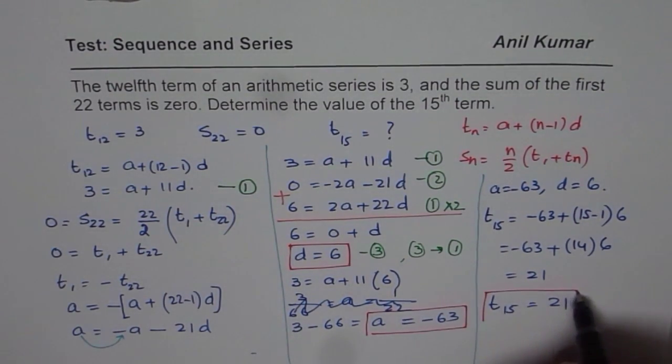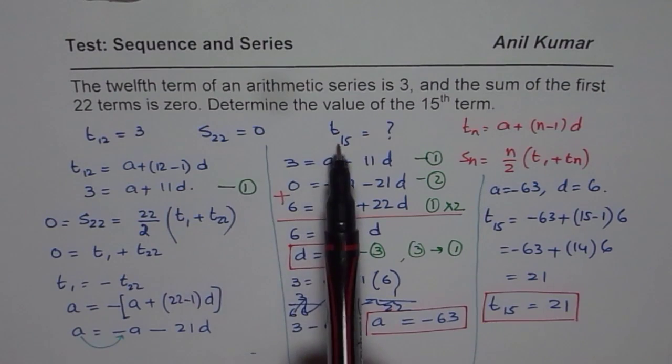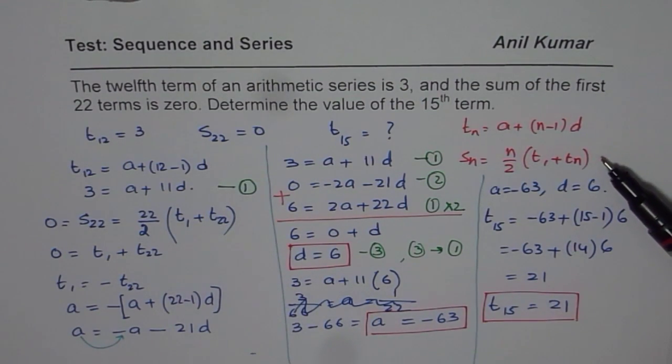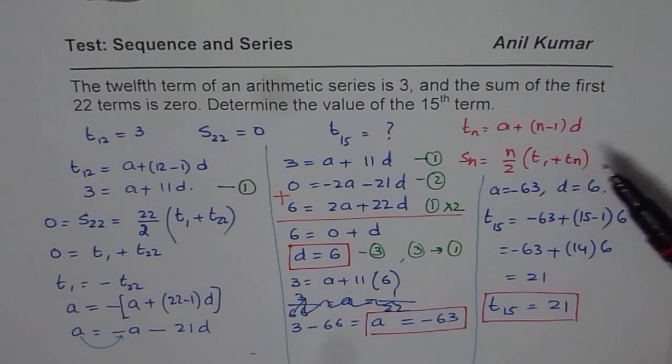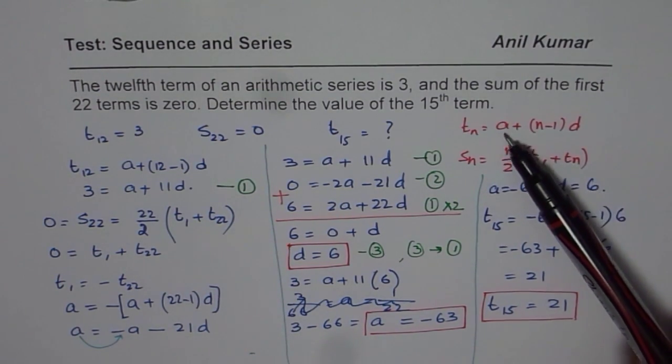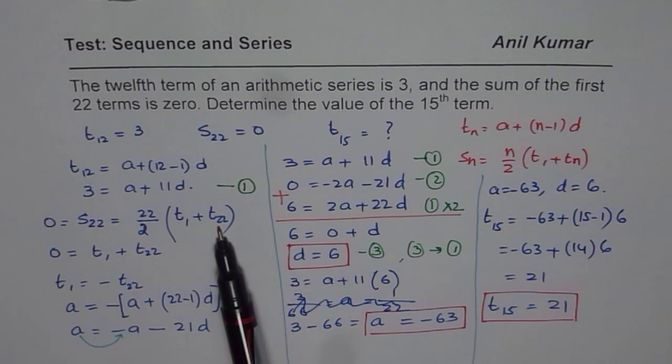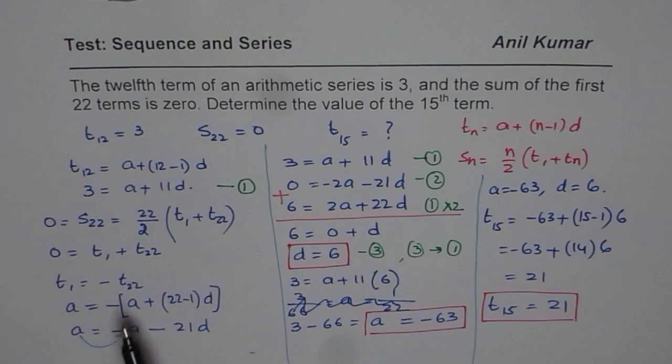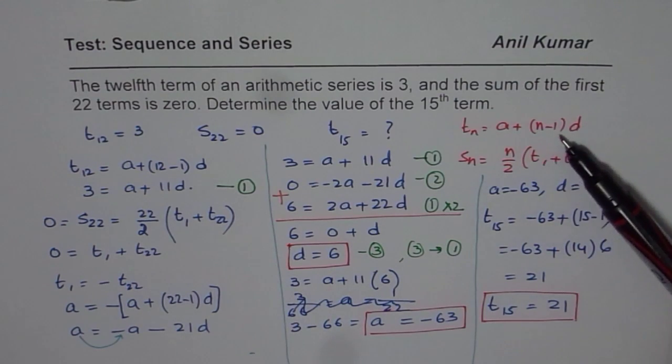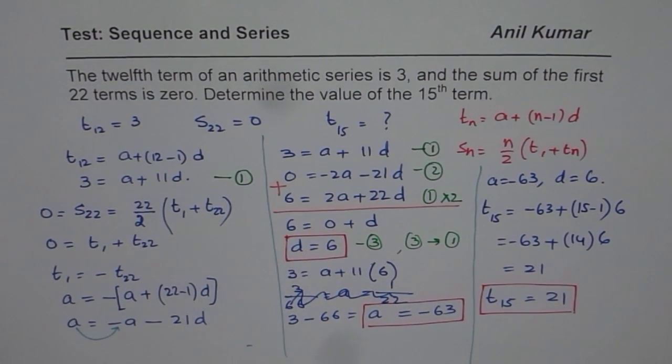So let us go through this solution. First step is always write down what you know and what you want to find. Now figure the formulas which you need to apply to get to the solution. Now from the formula, we know we want T15, so we should know A and D, 15 is known to us. To find A and D, we understood that sum of a series is 0 only if the first and the last term are negative of one another, or their sum is 0. From there, we got our second equation. First equation was very clear. Then using the two equations, we solved for both the variables A and D. Once we know them, we can easily find the 15th term as required by this question. I hope this helps. Thank you and all the best.